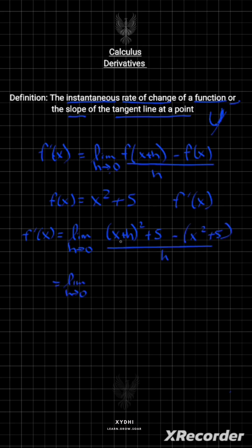Expanding (x+h)² gives x² + 2xh + h² + 5 - x² - 5 over h. The fives and x² terms cancel, leaving the limit as h approaches zero of (2xh + h²) / h.